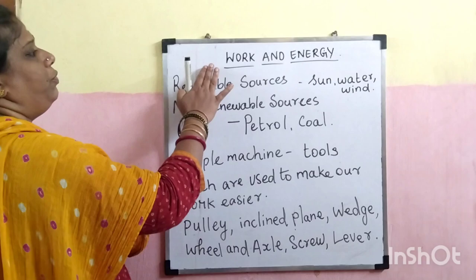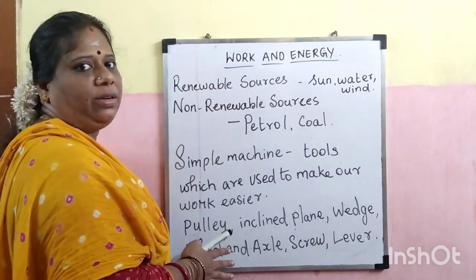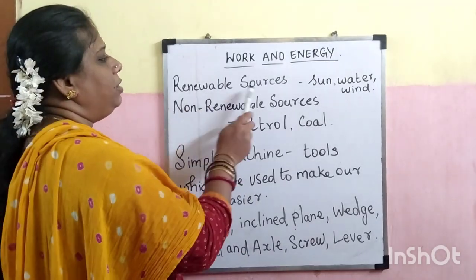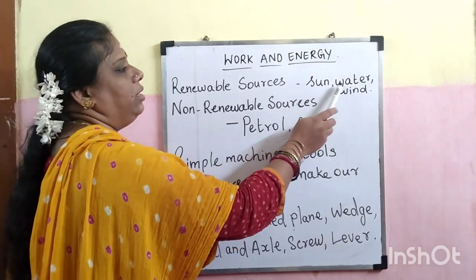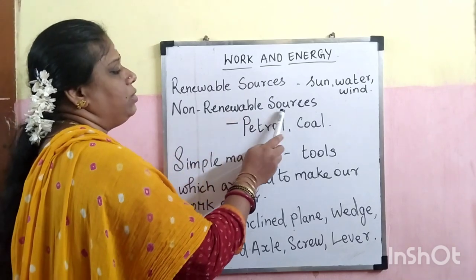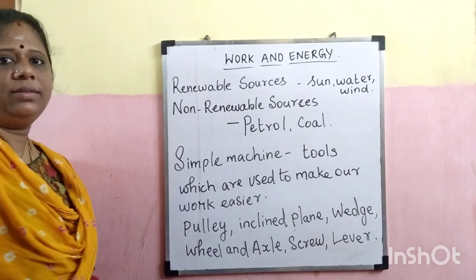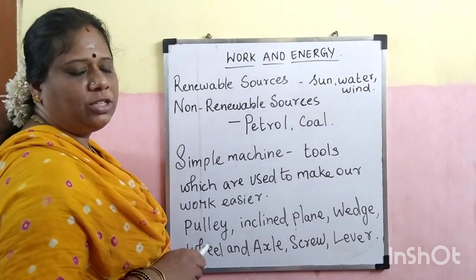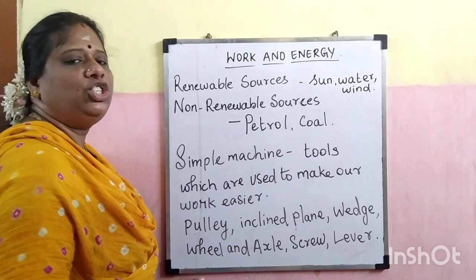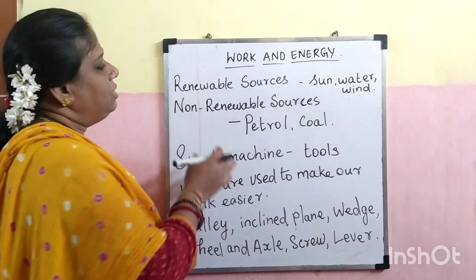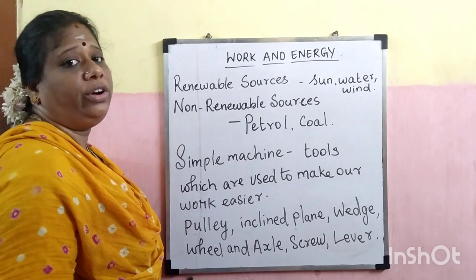Last week we learned about renewable sources and non-renewable sources. Renewable sources are the sources of energy that are replaced naturally over a period of time — examples include sun, water, and wind. Non-renewable sources are those that cannot be replaced once used — examples are petrol and coal.